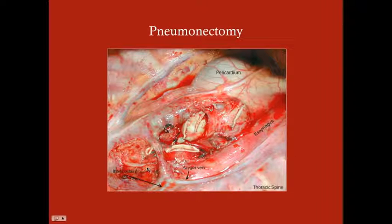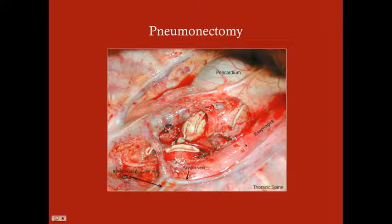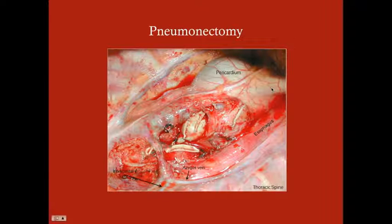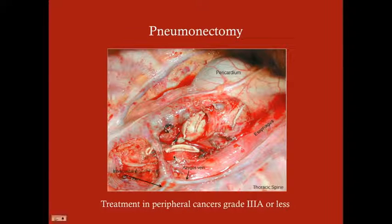A pneumonectomy — here illustrated as a left-sided pneumonectomy — reveals useful anatomy once the lung is removed. You can see the azygos vein in front of the esophagus, the pericardium, and the intercostal vein. You're looking into the posterior thoracic cage — it's interesting to see this anatomy in a real patient.